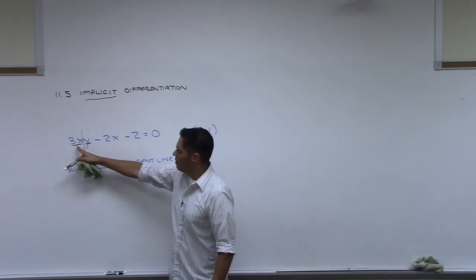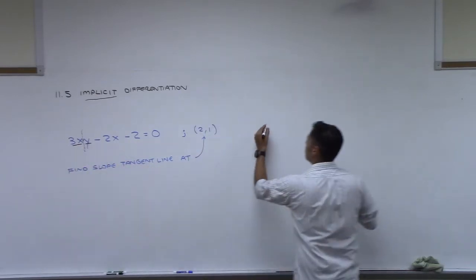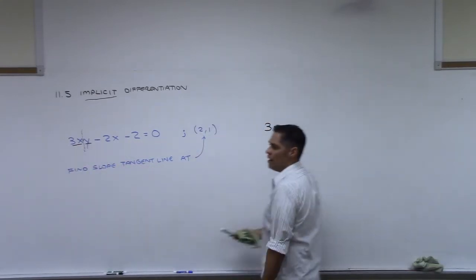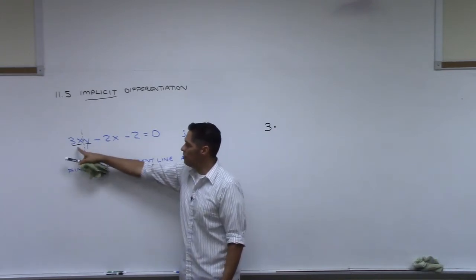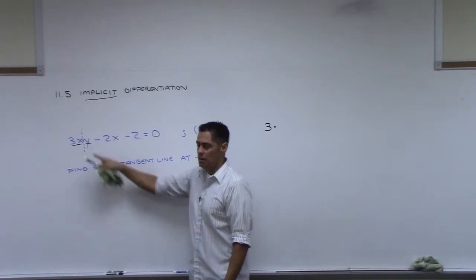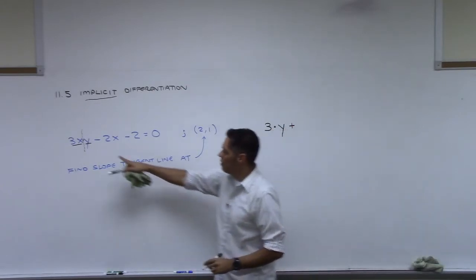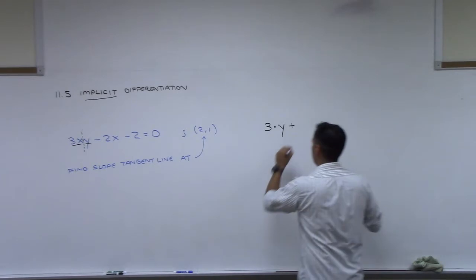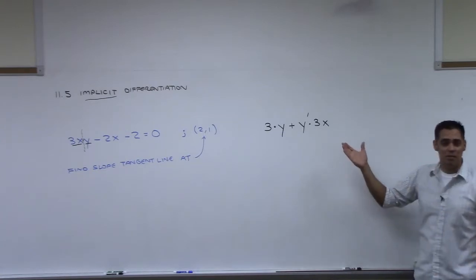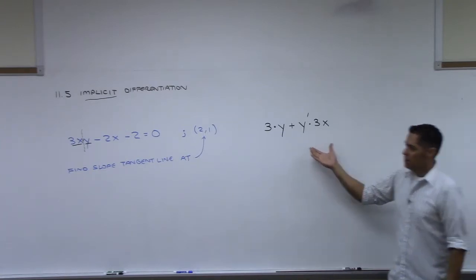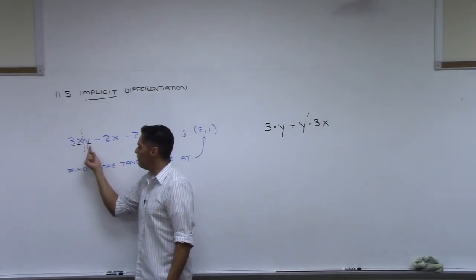So the product rule says, take derivative of this, which for us would be just 3. So we get 3 times y prime. Product rule. Derivative of this times this. Plus now the derivative of this, which is y prime times 3x. It's so critical that you all see this. That is the product rule on those two right there. Derivative of this times this, plus derivative of this times this.